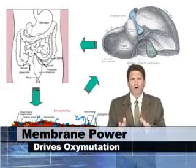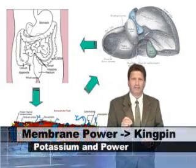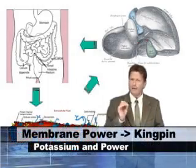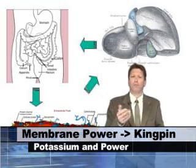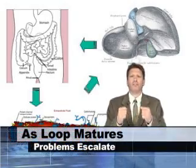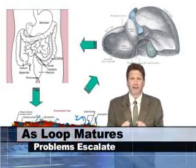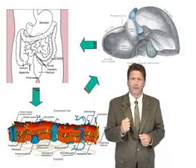Membrane electrical power, which drives oxymutation, is the kingpin in this loop. As the loop matures, escalating problems with liver and lipid absorption produce a self-hardening cycle, and the longer it lasts, the harder it is to break.